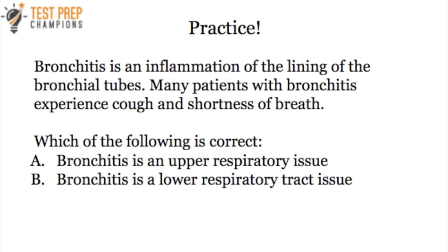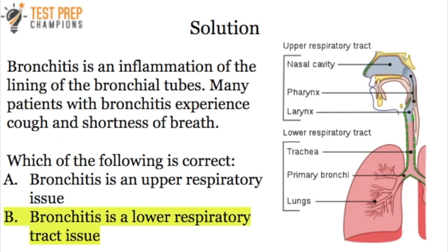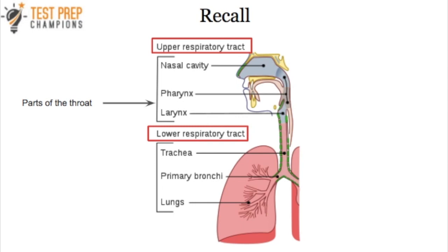Practice question: bronchitis is an inflammation of the lining of the bronchial tubes, and many patients experience cough and shortness of breath. Which of the following is correct? A. Bronchitis is an upper respiratory issue. Or B. Bronchitis is a lower respiratory tract issue. The answer is B. In the lower respiratory tract, that's where the bronchi are — so that's how you would get that right.